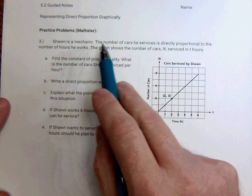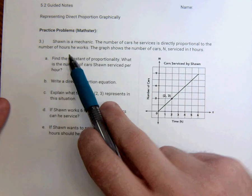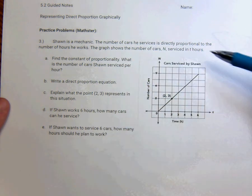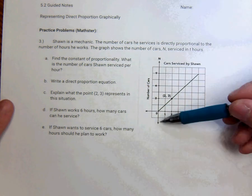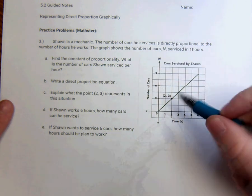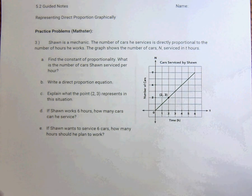So Sean is a mechanic. The number of cars he services is directly proportional to the number of hours he works. The graph shows the number of cars serviced in T hours. So this is cars serviced by Sean. This is T. So time is on the bottom. And the number of cars serviced is going up and down, which makes sense. That's the way it's always going to be.